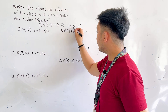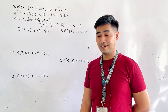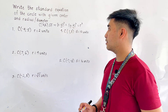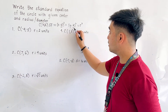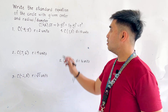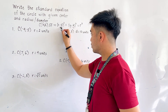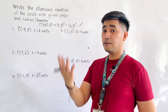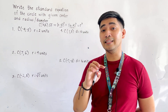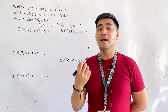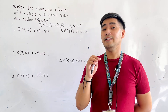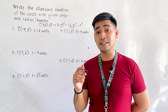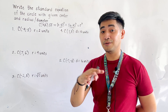Here h and k are the coordinates of the center — h is the x-coordinate and k is the y-coordinate. Notice that both terms use minus signs. Remember that when substituting the given center into the equation, we take the opposite sign. For example, if the given center is (negative 1, negative 2), it becomes x plus 1 quantity squared plus y plus 2 quantity squared equals r squared.